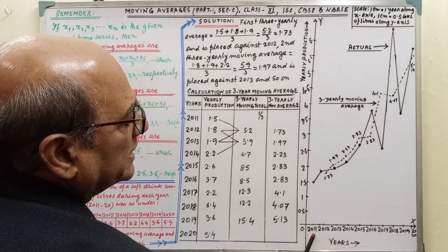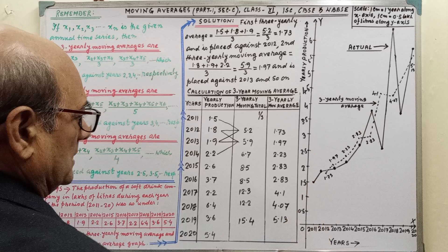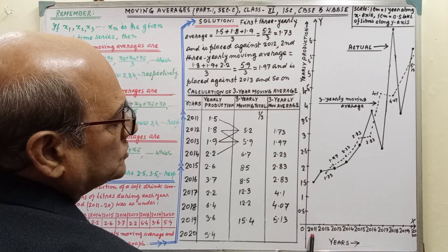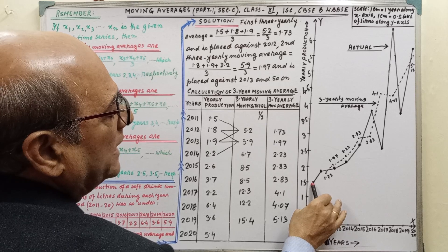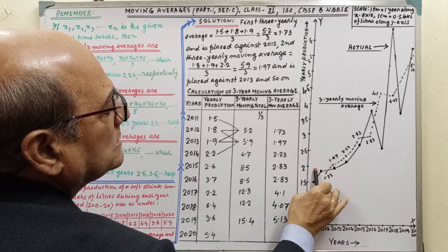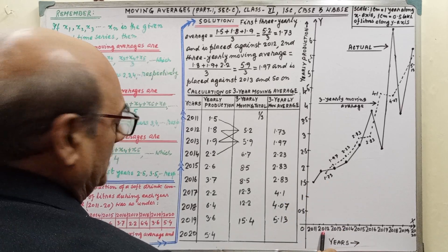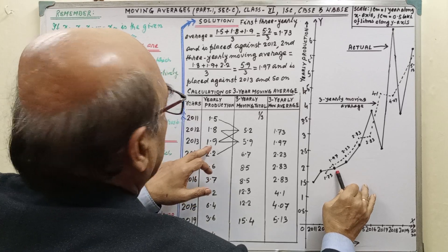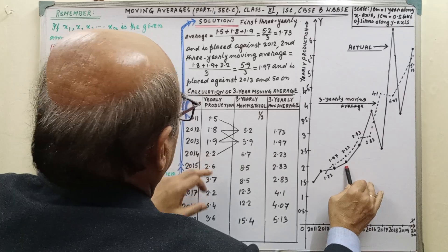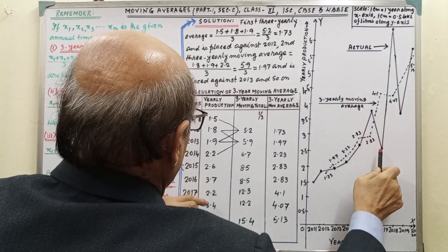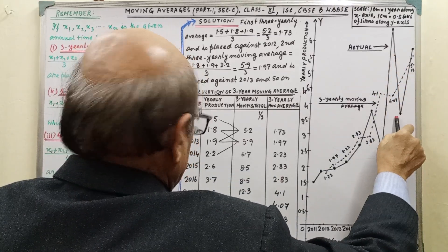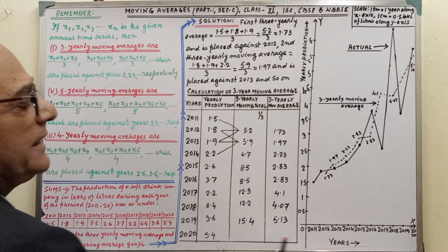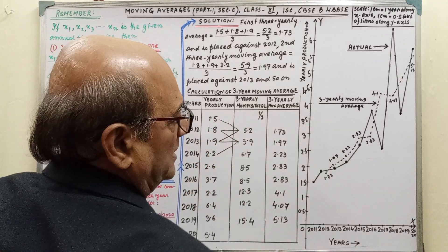This scale solely depends on the problem. You have to notice what's the difference given between two. We have to take the gap uniformly. That is yearly production and this is years. After that, we have to plot the point. 2011, from here we have to start, and that is 1.5. So it will start from here. After that, 1.8, that means this 1.8 and 2012. Then, 2013, that is 1.9. Then 2.2, then 2.6, then 3.7, then 2.2 again, 6.4 and 3.6 and 5.4.